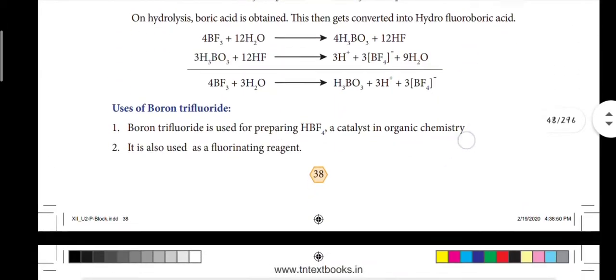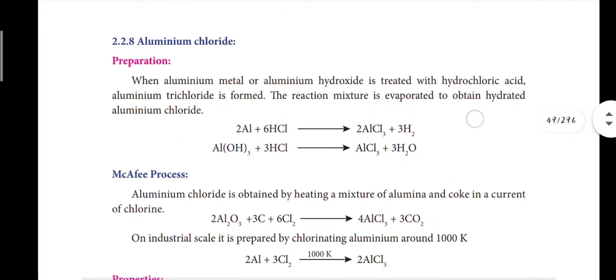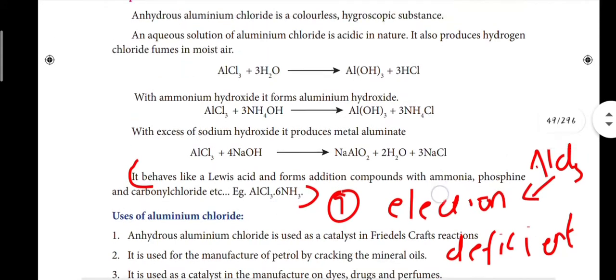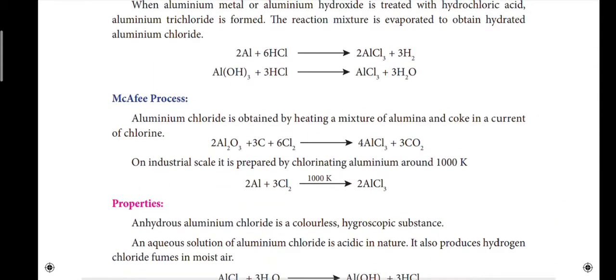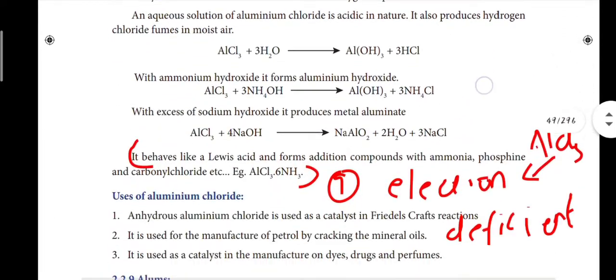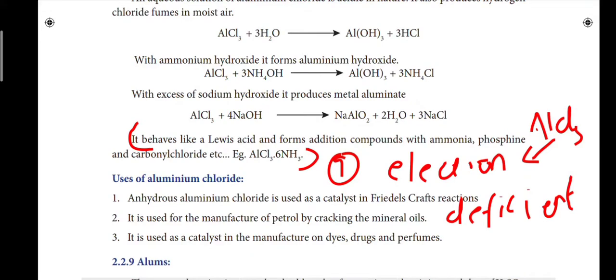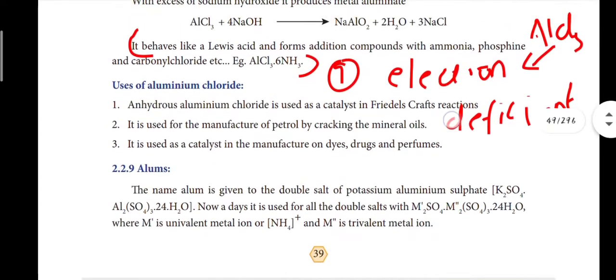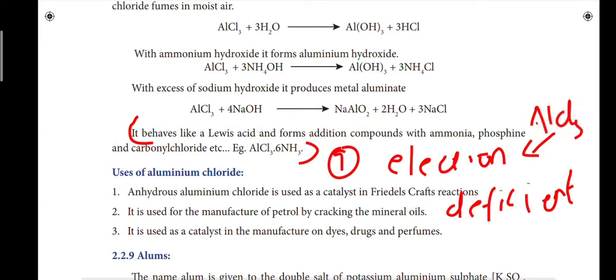If you study the P block lesson, I'll tell you how to do it easily — try to teach and comment. Next: how does AlCl3 act as a Lewis acid? Page number 39. AlCl3 is an electron-deficient molecule, so it acts as a Lewis acid. The key point: AlCl3 is electron-deficient, therefore it acts as a Lewis acid.